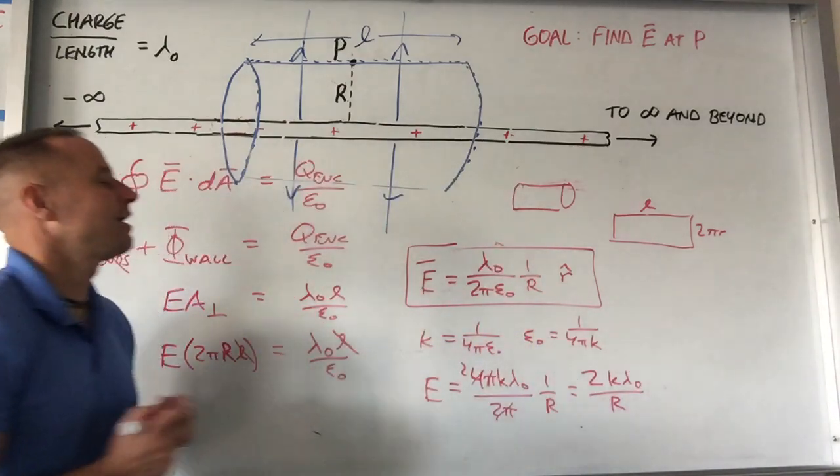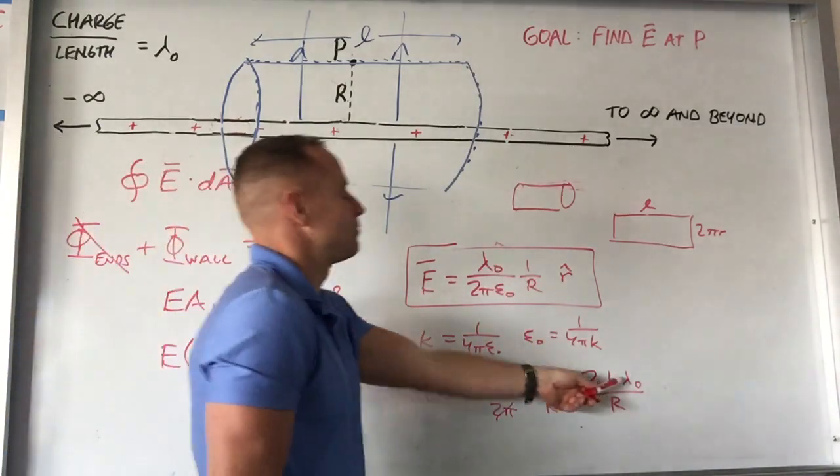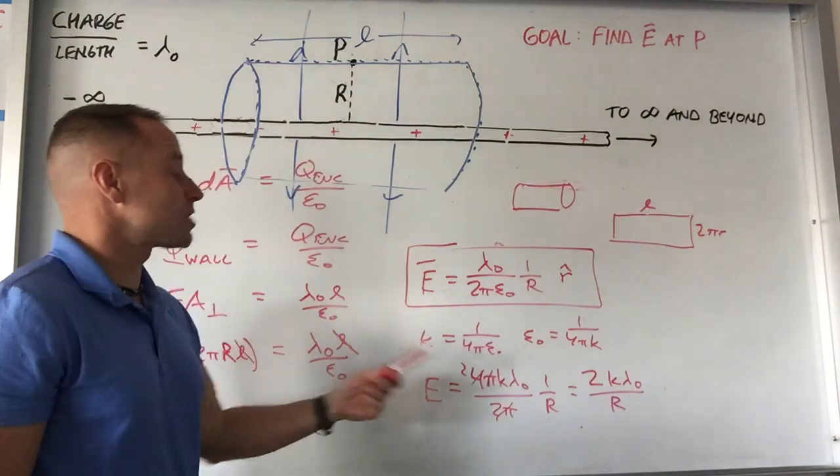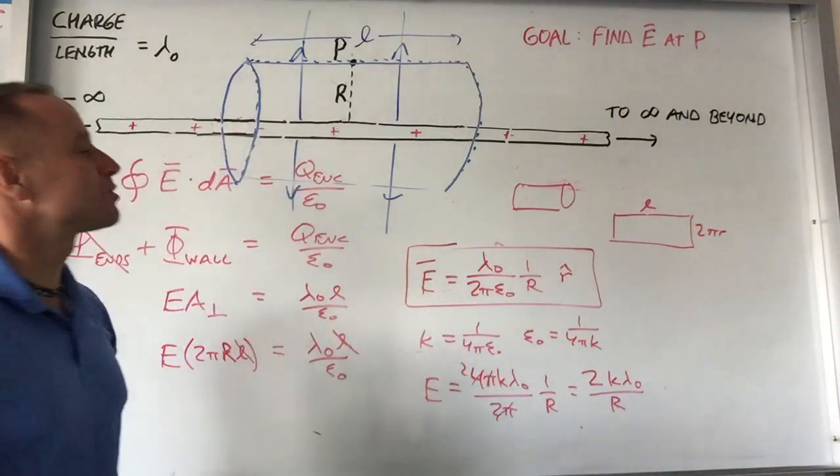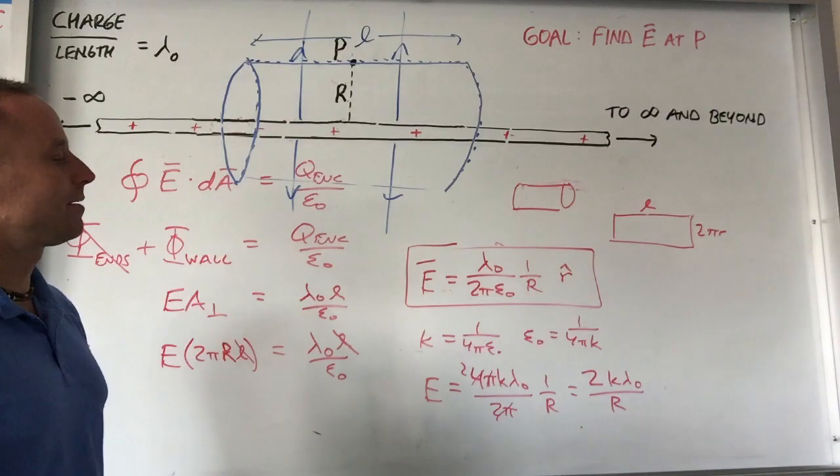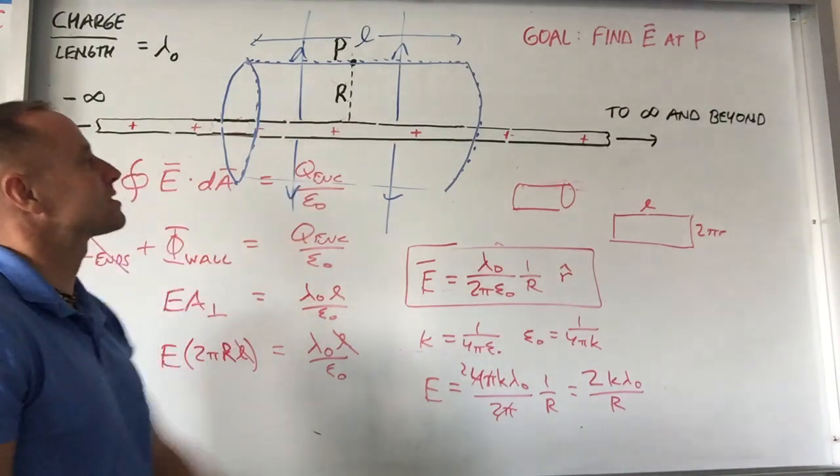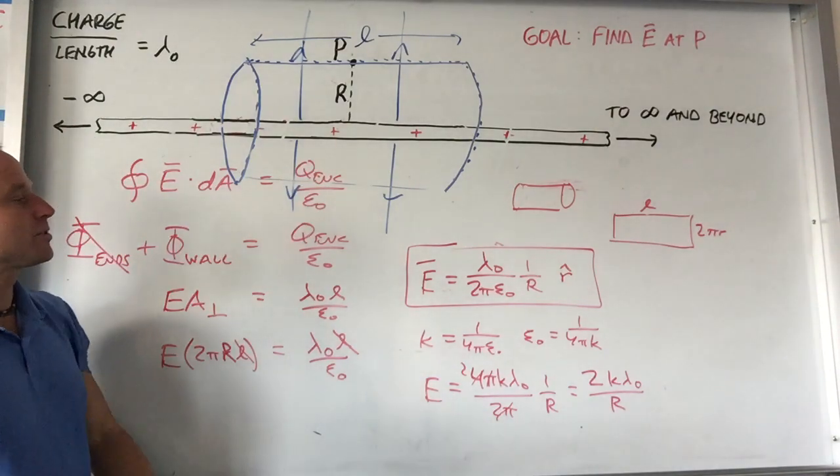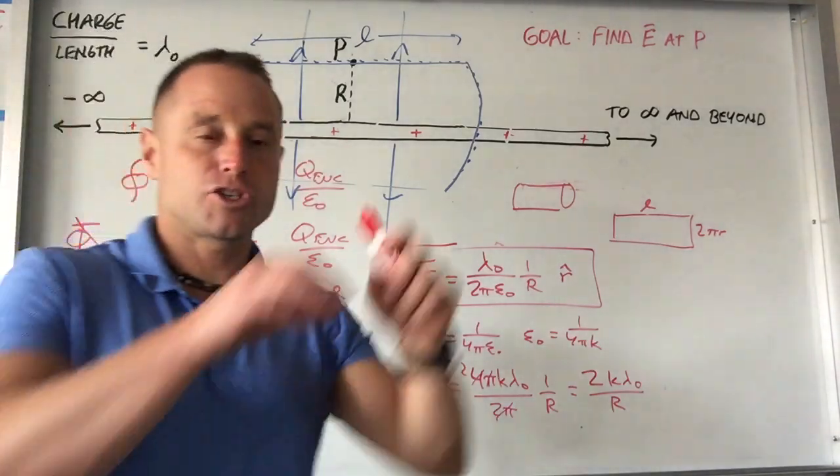Which if you look back at an example that we did with Coulomb's law, that's the field that we got with a much more difficult approach using a much more laborious method using Coulomb's law. So this was using Gauss's law to find the electric field around a long charge rod.